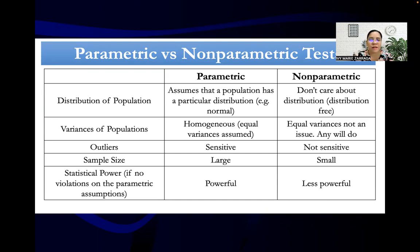Parametric is very sensitive to outliers, whereas non-parametric is not sensitive. In performing the normality test, since both the KS and Shapiro-Wilk tests will be shown, we have to check — even if there's only one variable or factor group that shows non-normal or not statistically significant — then we have to use non-parametric.